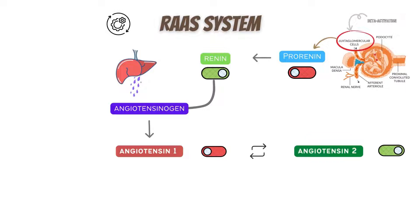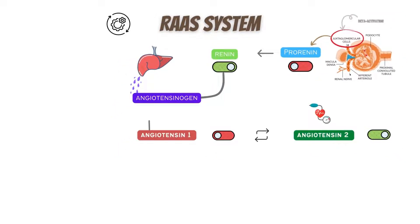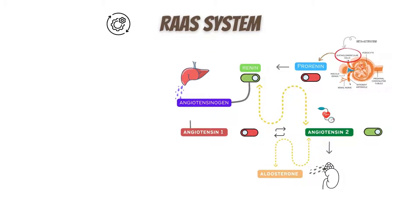Angiotensin-2, which acts as the main character in the story, is very crucial for the increase of blood pressure in certain circumstances. Angiotensin-2 also acts on the adrenal cortex, specifically the zona glomerulosa, where it stimulates the release of aldosterone. These three hormones — renin, angiotensin, and aldosterone — form the RAS system, which acts to manage blood volume and arteriolar tone on a long-term basis.